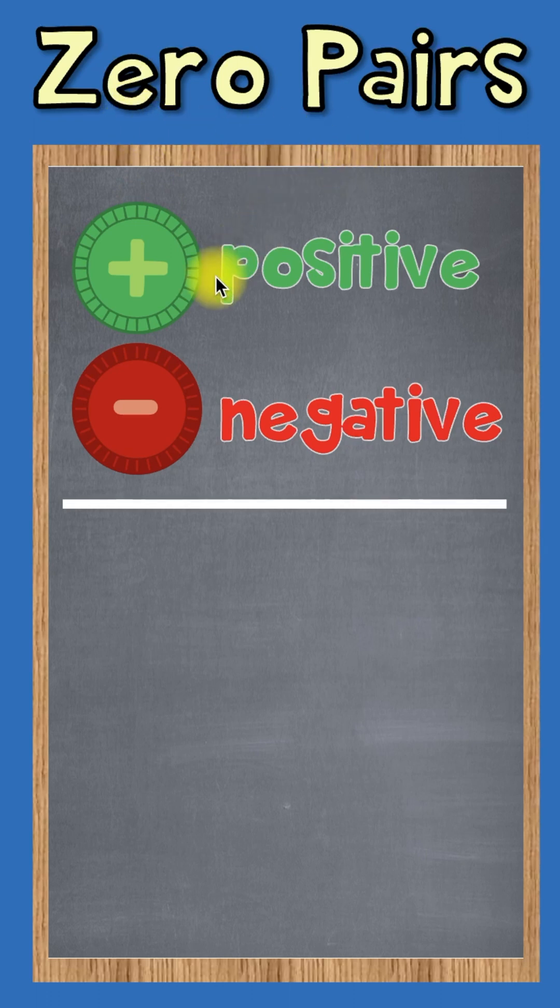To make zero pairs, we combine one green counter with one red counter. And since we're dealing with a pair, that's why it's called zero pairs.